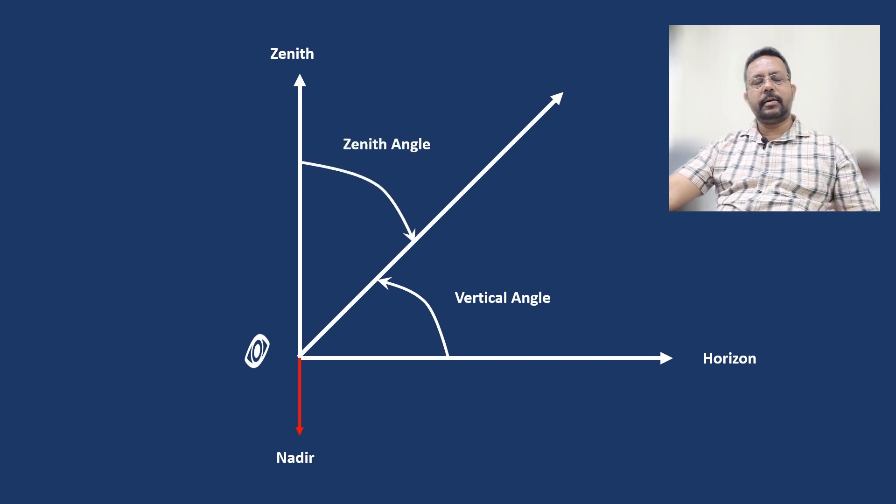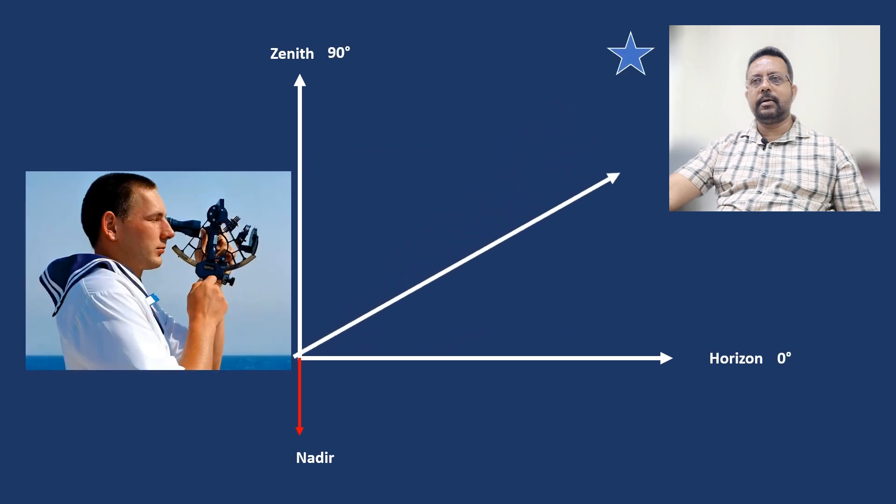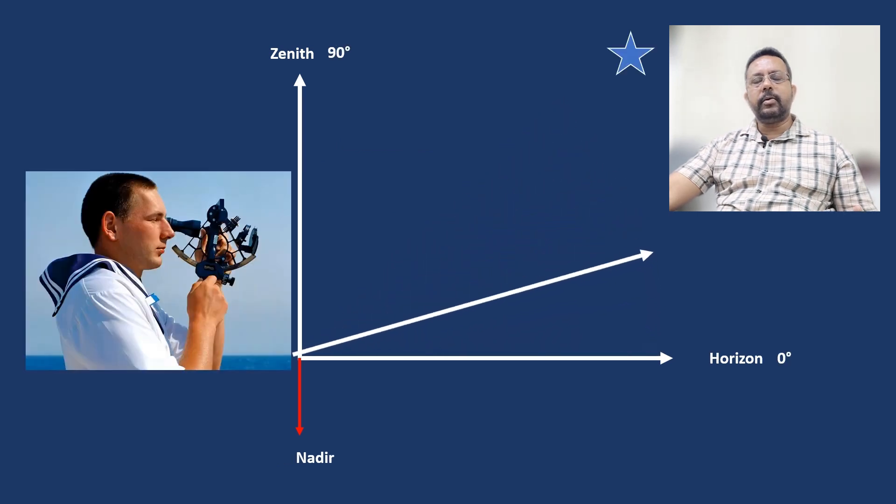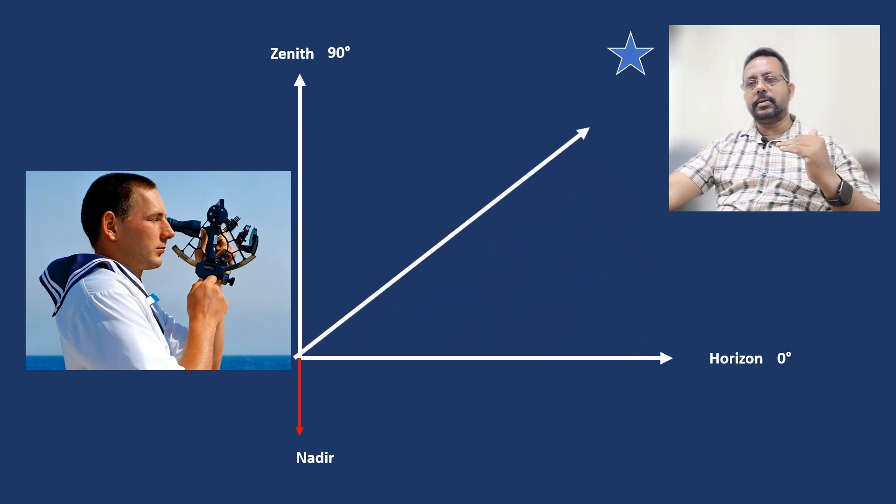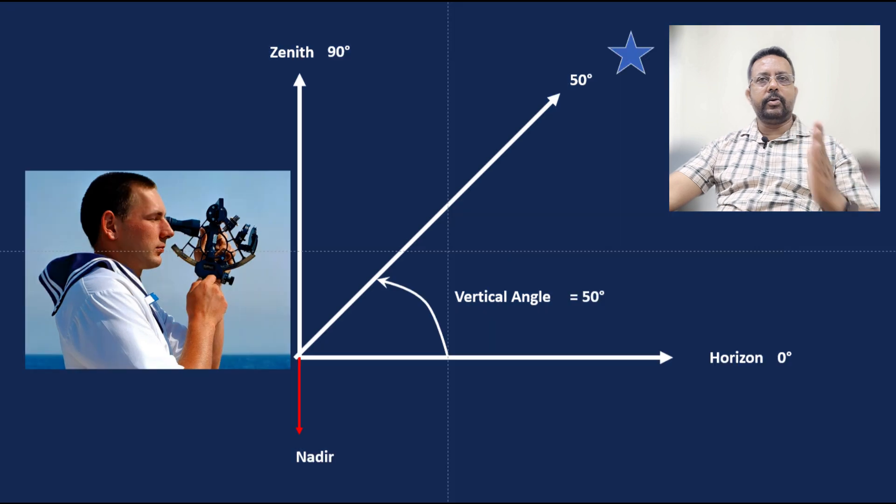So when you are observing with a sextant, you are measuring the angle with reference to the horizon. At that time, the horizon is zero degrees and your zenith is 90 degrees. So suppose you are measuring the angle to a star and you want to know what is the vertical angle of the star. This angle from the horizon is your vertical angle. With a sextant, you can observe a vertical angle with reference to the horizon.